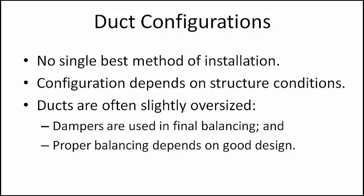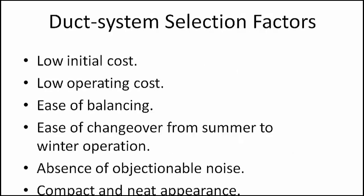Small residential installations usually are designed by the HVAC contractor. There are several requirements that should be met in order to provide both economy and good performance for the homeowners. These requirements include: low initial costs, which depends primarily on simplicity of design and minimum oversizing of the ducts; low operating costs, which depends on whether the system is designed for the minimum practical pressure loss; ease of balancing; ease of changeover from summer to winter operation; absence of objectionable noise; and compact and neat appearance.